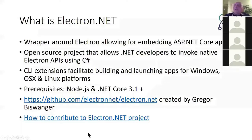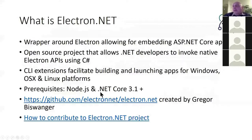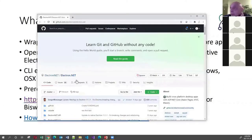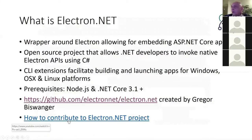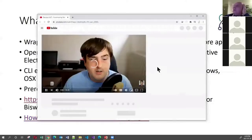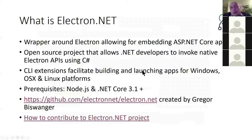The prerequisites are: you must have Node installed, because behind the scenes it takes your C# code and converts it to Node, and ultimately it is that Node app that becomes your desktop app. You must also have at least .NET Core 3.1 or later — today I'll be using .NET 5.0. This is the open source GitHub site, started by Gregor Biswanger, a Microsoft MVP from Nuremberg, Germany, who also created a YouTube video on how to contribute to the Electron.NET project.